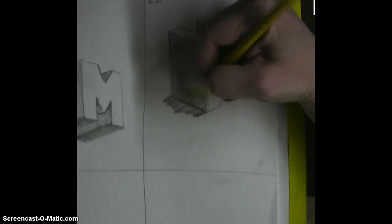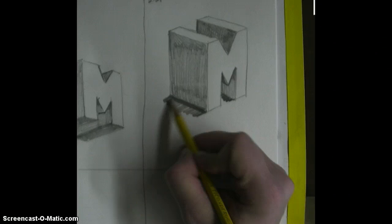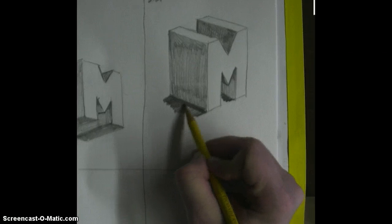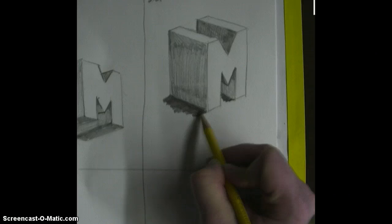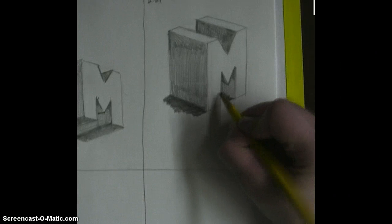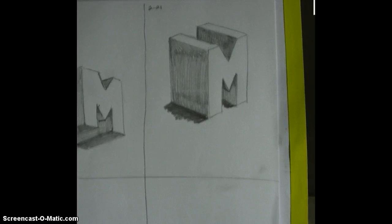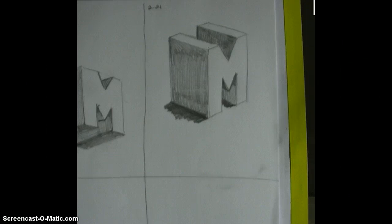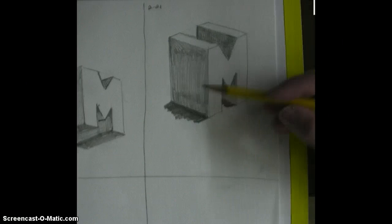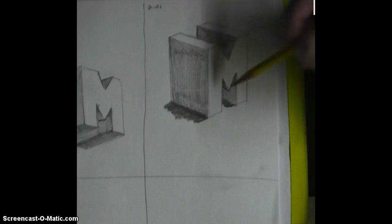Make sure it goes all the way up to that edge, just like that. There you have it, there is your block 3D M. So I'd like you to make one of these today. Please make sure you watch your proportion, try to keep the legs of the M equal, watch your angles.